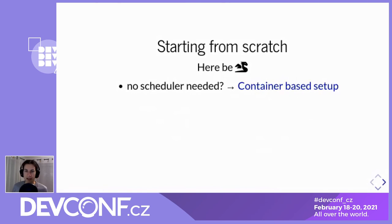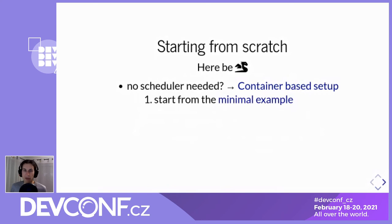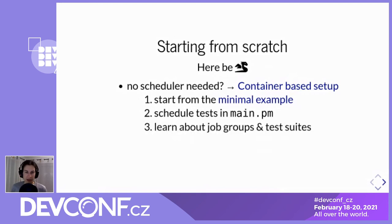If you want to do tests with OpenQA that don't require the OpenQA scheduler, there's been recent development that allows you to run iso-to-video inside a container. If you just want the image recognition part and don't need the scheduler and surrounding parts, getting started is really simple — just go to the link in the slides for the container-based setup. Otherwise, go to GitHub, grab the minimal example, look at that, and then schedule a few tests in the main entry point called main.pm. Learn about job groups and test suites, write your own job groups and test suites for your appliance, and then magic happens.